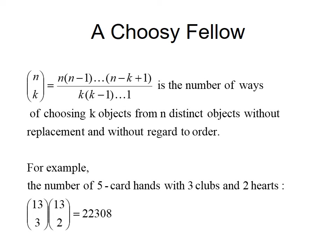Combinations can be done quickly for things where order doesn't matter. For example, a five-card hand with three clubs and two hearts: there are 13 clubs, and you choose three without caring about order. Then, remembering the soup-and-salad rule — you want both — you multiply by 13 hearts choose 2. That gives you the big number.